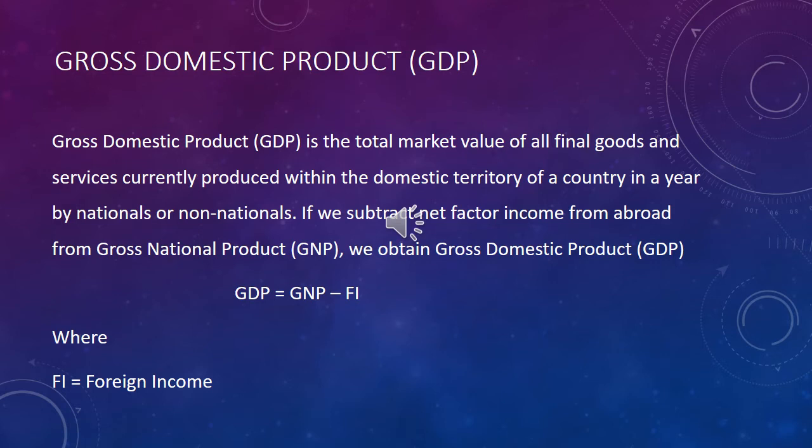The second important concept is Gross Domestic Product (GDP). Gross Domestic Product is the total market value of all final goods and services currently produced within the domestic territory of a country in a year, by nationals or non-nationals. If we subtract net factor income from abroad from GNP, we obtain GDP. The equation is: GDP = GNP − FI, where FI represents foreign income.